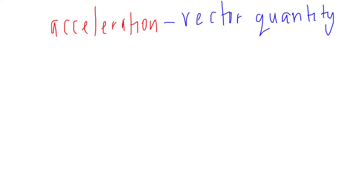Acceleration. There are a lot of things going on. Acceleration is a vector quantity. It is a vector quantity, which means that it has a direction and magnitude.